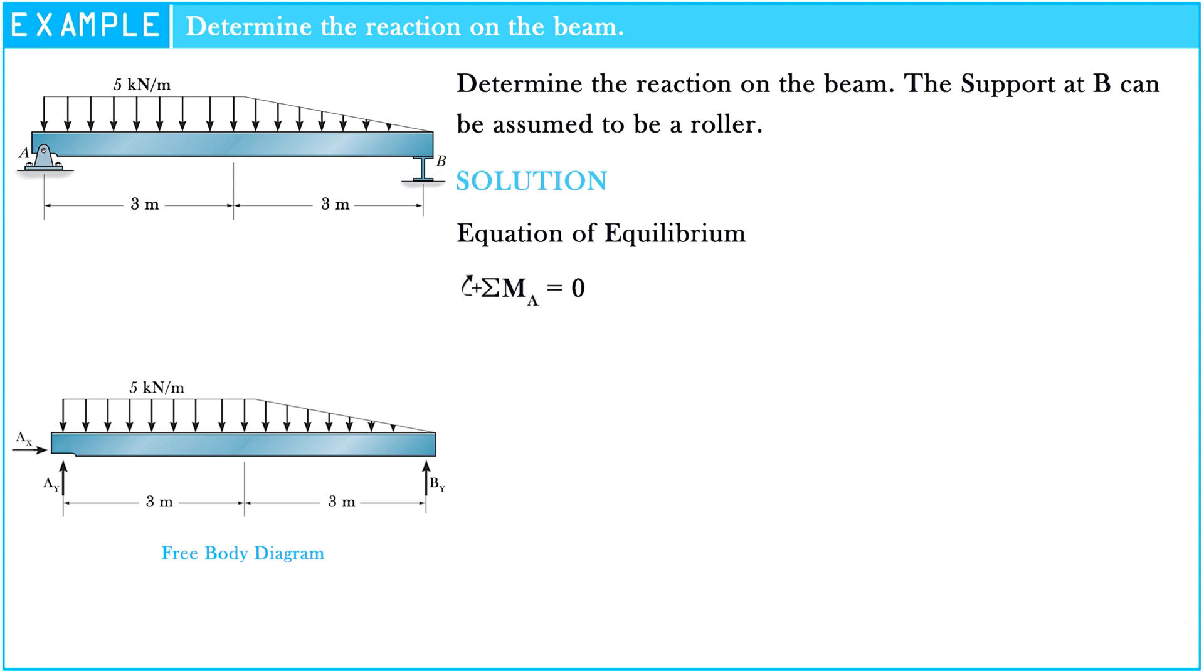The sigma of moment at point A is equal to 0. So, 5 kN per meter multiply by 3 meter, multiply by 3 meter divided by 2 plus 5 kN per meter multiply by 3 meter divided by 2, multiply by 3 meter plus 3 meter divided by 3, minus BY multiply by 6 meter is equal to 0. Hence, BY value is equal to 8.75 kN.